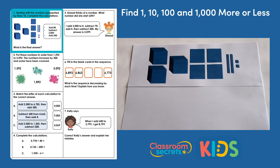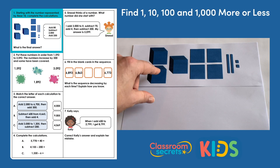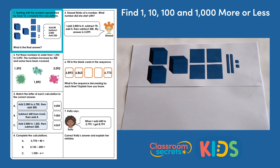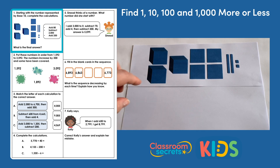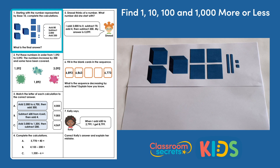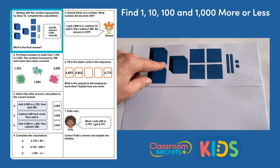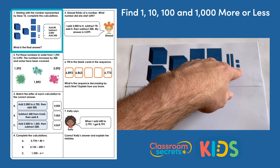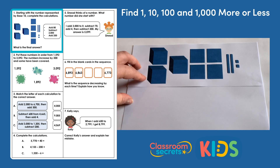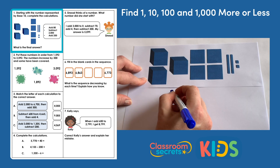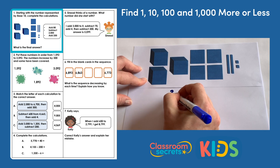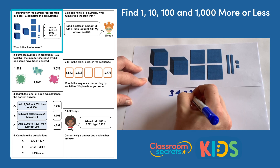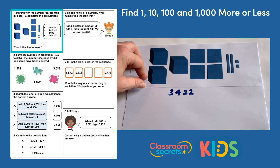Question 1. Starting with the number represented by base 10 which I've put here, complete the calculations. The first step is to work out what number is represented by the base 10. We have three thousands, four hundreds, two tens and two ones, so that together makes three thousand four hundred and twenty-two.